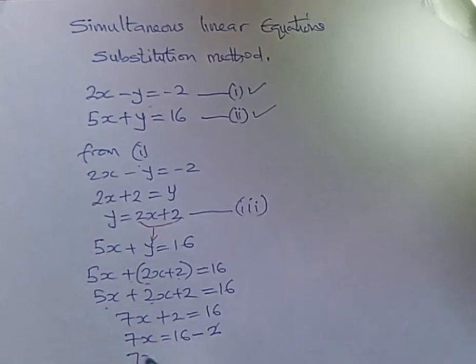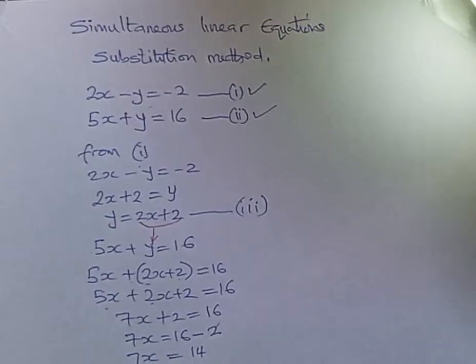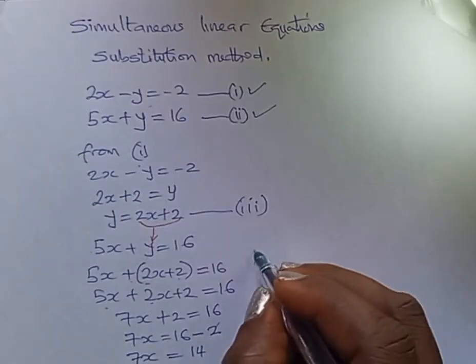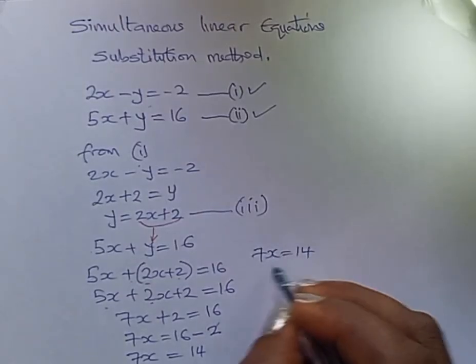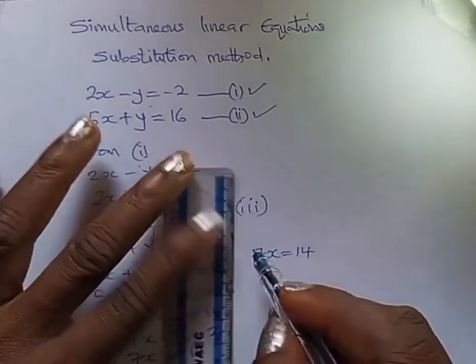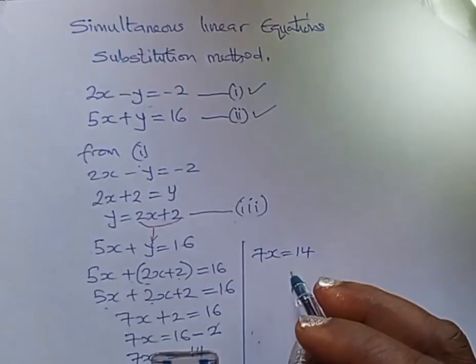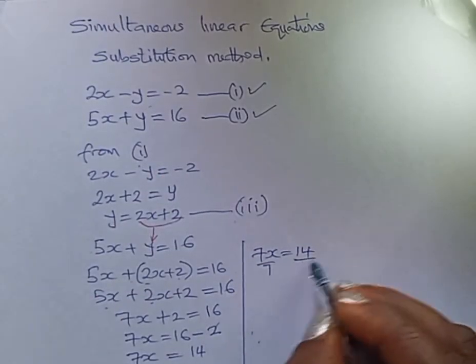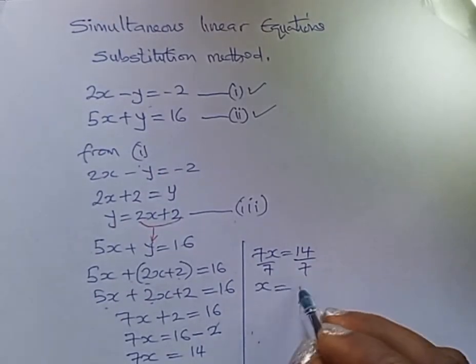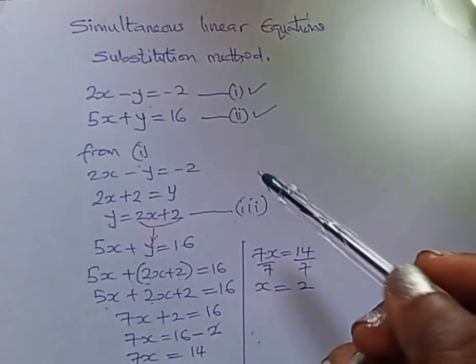That's 14. Dividing both sides by 7, we have 7x = 14. Divide both sides by 7, over 7, over 7. So our x = 2.